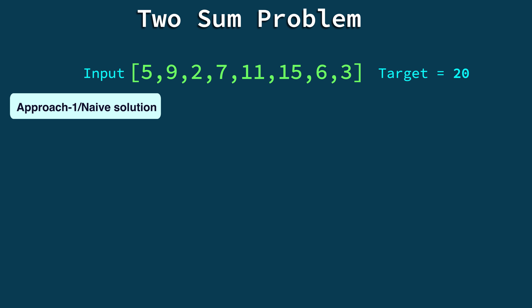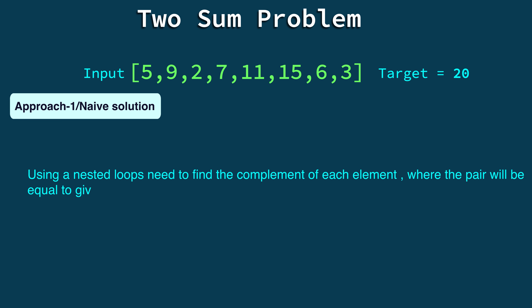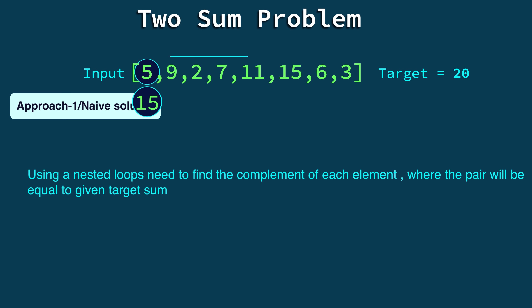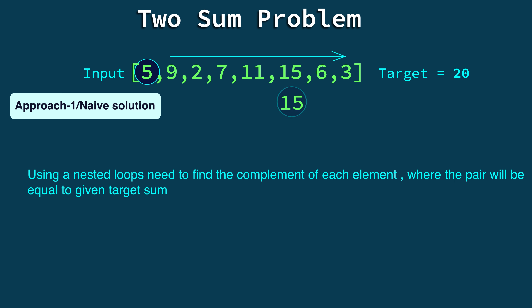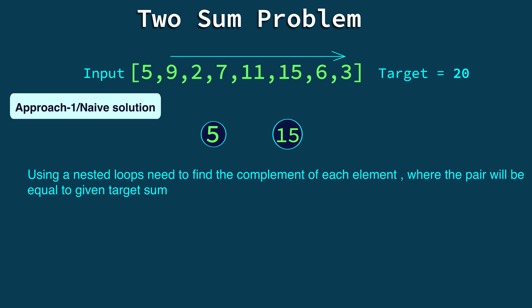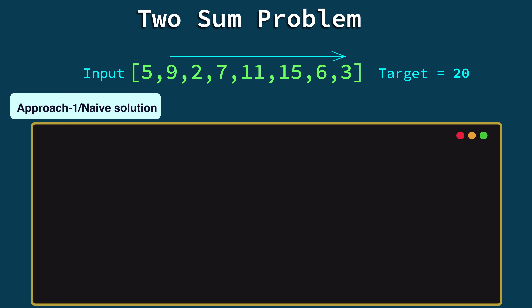For the naïve solution, we take each element at a time and find its complement — the value that, added to it, gives the target. Starting with the first element 5, we need its complement 15, which gives target 20. To find it, we search from the second element toward the end of the array. This requires two loops: the outer loop fixes the current element and the inner loop searches for its complement.